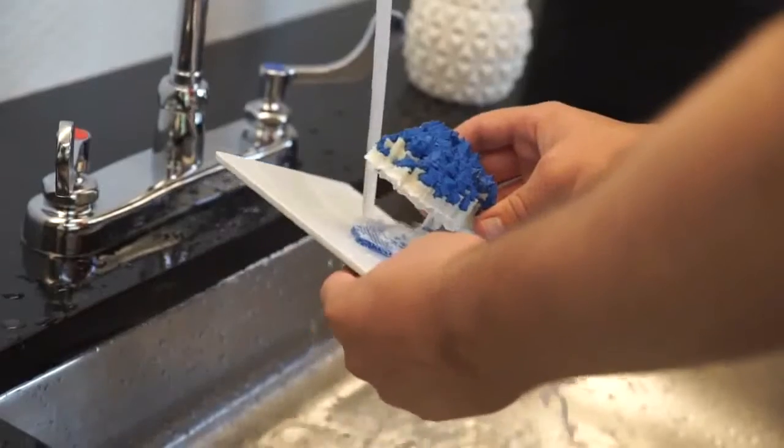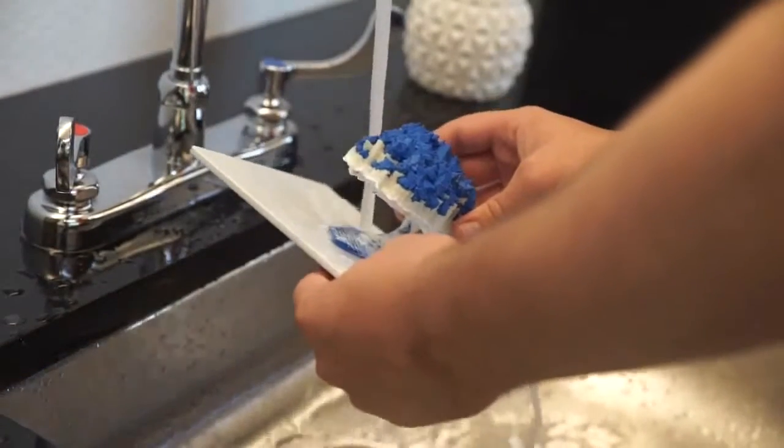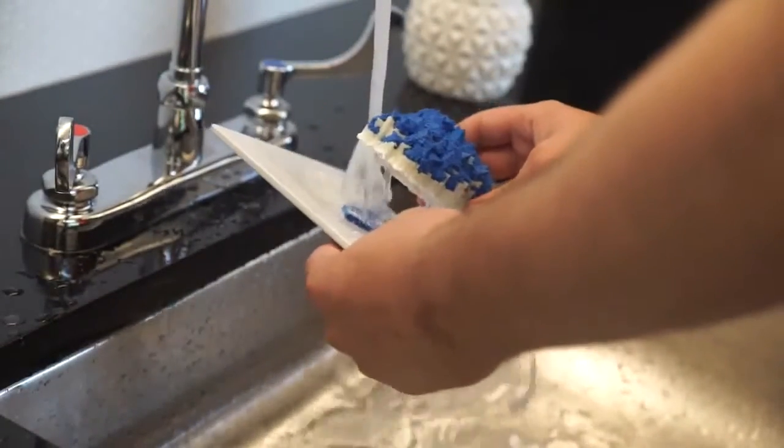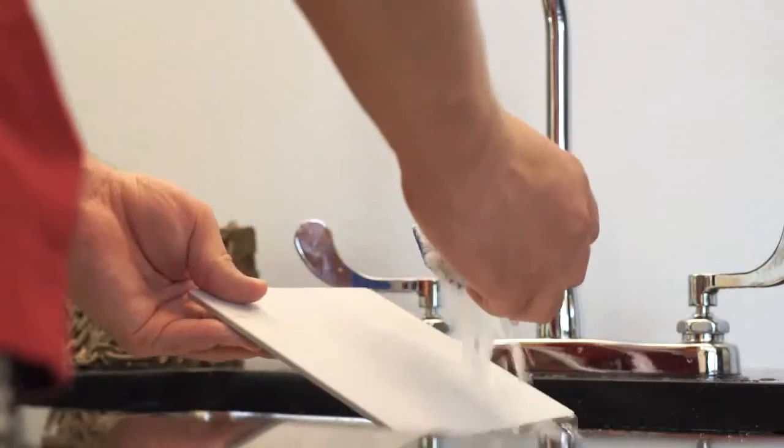Next, take the entire plate to a sink and run warm water over the print. Keep running the water over the print until it separates from the plate.